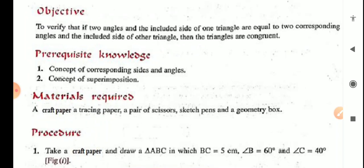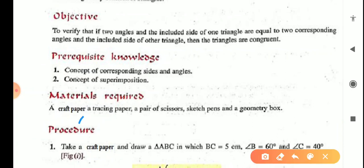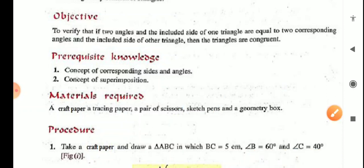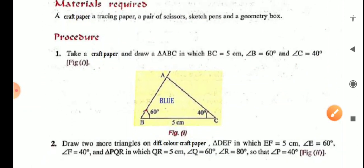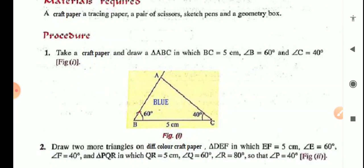Material required: craft paper, tracing paper, pair of scissors, sketch pens, geometry box, etc. Now the procedure is written, and you have to write this procedure on the lining page. All the writing part you will do on the lining page.